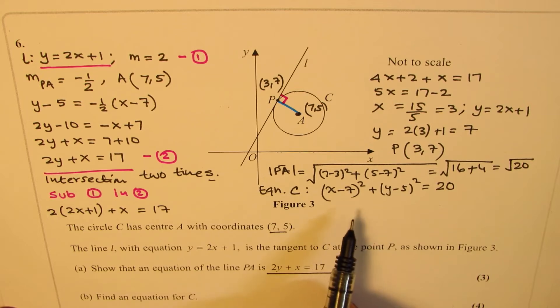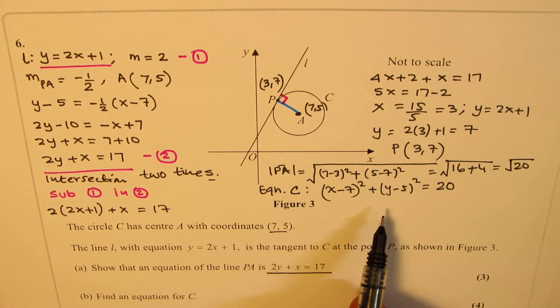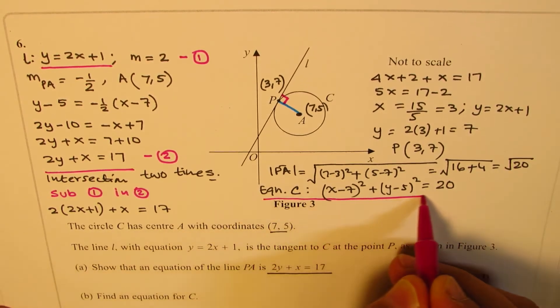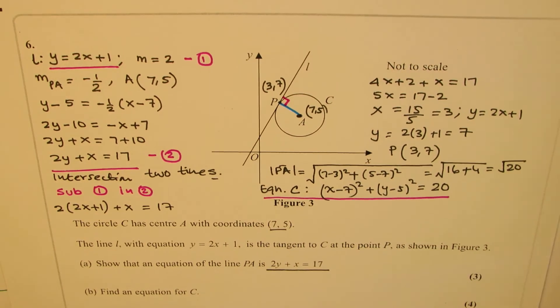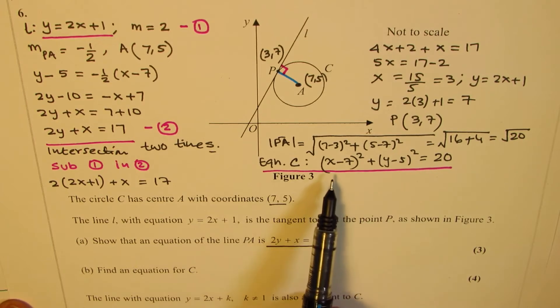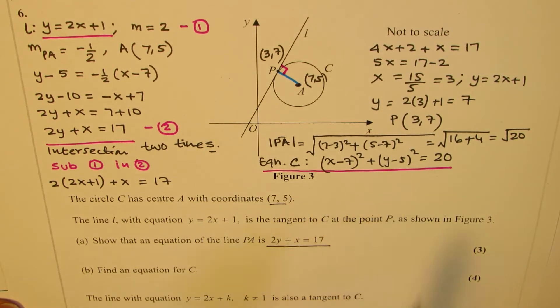It says find the equation of the circle. You can actually expand and simplify, but this is good enough. We have done part B, which is find an equation for C: (x - 7)² + (y - 5)² = 20.